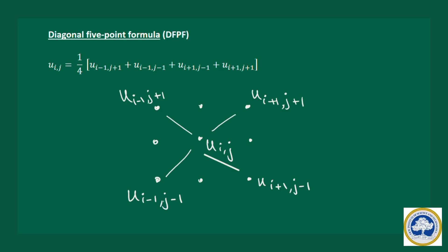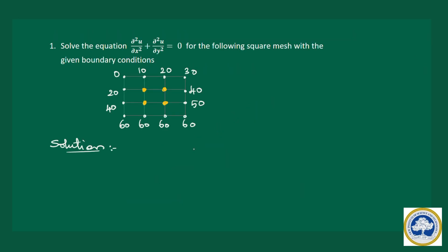For Liebman's iteration process, we use both the standard five-point formula and the diagonal five-point formula. Since the standard five-point formula has less error, we will use it always. In some cases where it is not possible, we use the diagonal five-point formula. Now let us solve one problem: solve ∂²u/∂x² + ∂²u/∂y² = 0 for the following square mesh with the given boundary conditions. We have to find the four intermediate values.